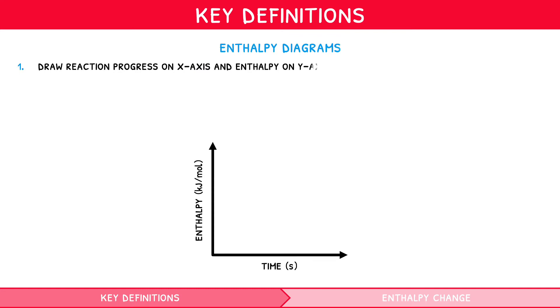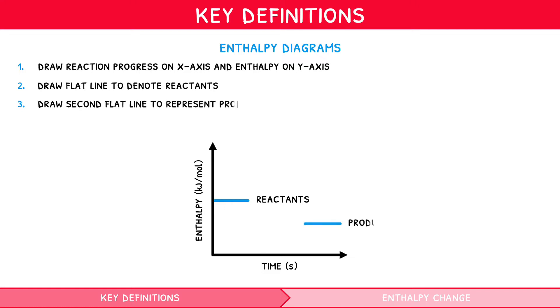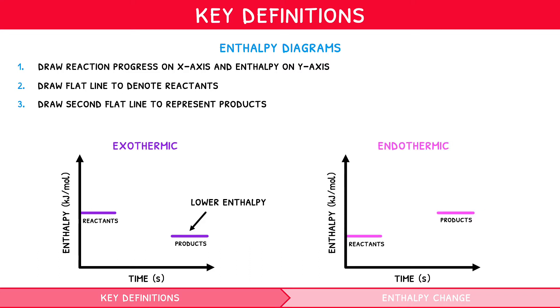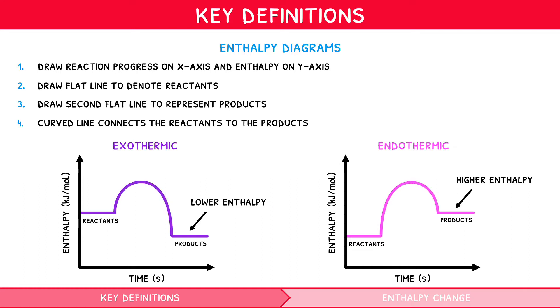For your IB Chemistry exam, you are expected to draw enthalpy diagrams to represent both types of reaction. Draw reaction progress along the x-axis and enthalpy along the y-axis. Draw a flat line to denote the position of the reactants, and a second flat line disconnected to represent the products. For an exothermic reaction, products will have a lower enthalpy than the reactants, whereas for an endothermic reaction, the products will have a higher enthalpy. A curved line then connects the reactants to the products, known as the reaction pathway. You need to be comfortable labelling the enthalpy change on these diagrams, which is the difference in height between each flat line. We will revisit these diagrams in IB Chemistry Topic 6 in the context of activation energy.